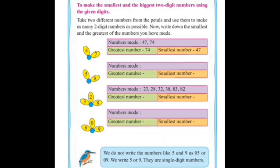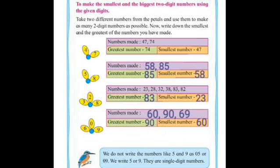Students, just have a look on the note given. We do not write the numbers like 5 and 9 as 05 or 09. We write 5 or 9. They are single digit number. As I have explained to you students, you cannot write 05 as two digit number or 09 as two digit number, because they represent the single digit. See students, this way you have to solve the sum.